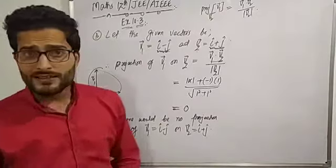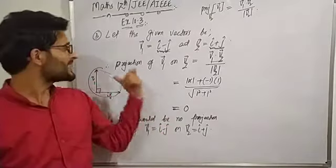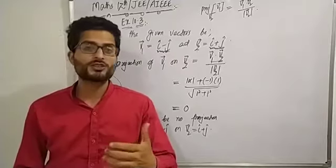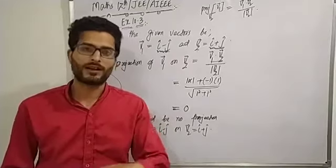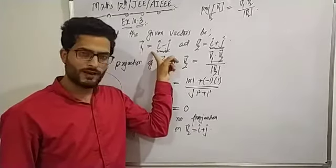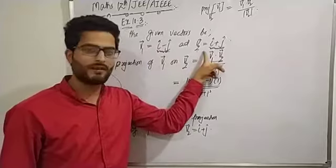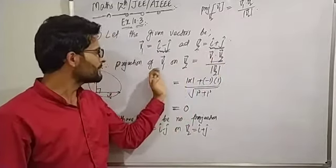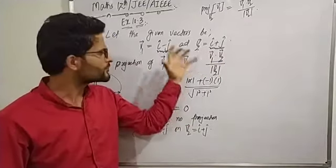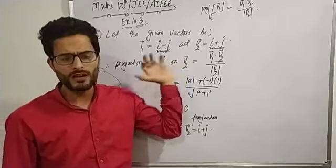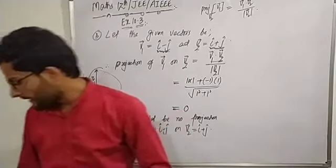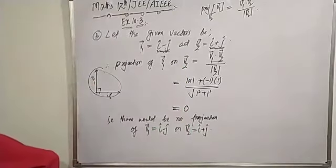There is no projection of v1 = i − j on v2 = i + j because their dot product is 0. Since these are non-zero vectors with zero dot product, they are perpendicular to each other — hence no projection exists. Question number 4 is similar; you can solve it yourself.